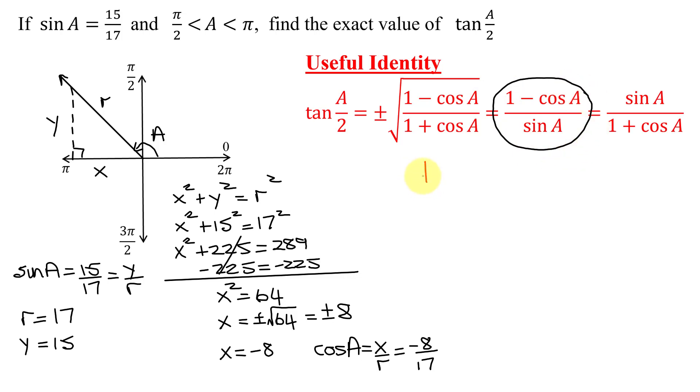So I know that the tangent of A over 2 is going to equal 1 minus the cosine of A, that's negative 8/17, all divided by the sine of A, which we were given, is 15 over 17.